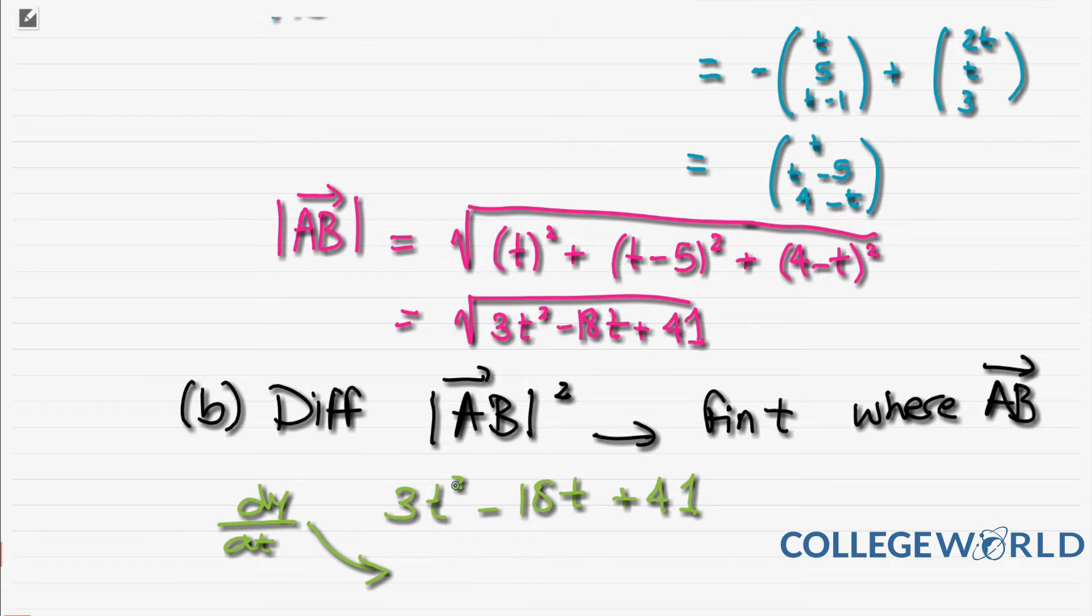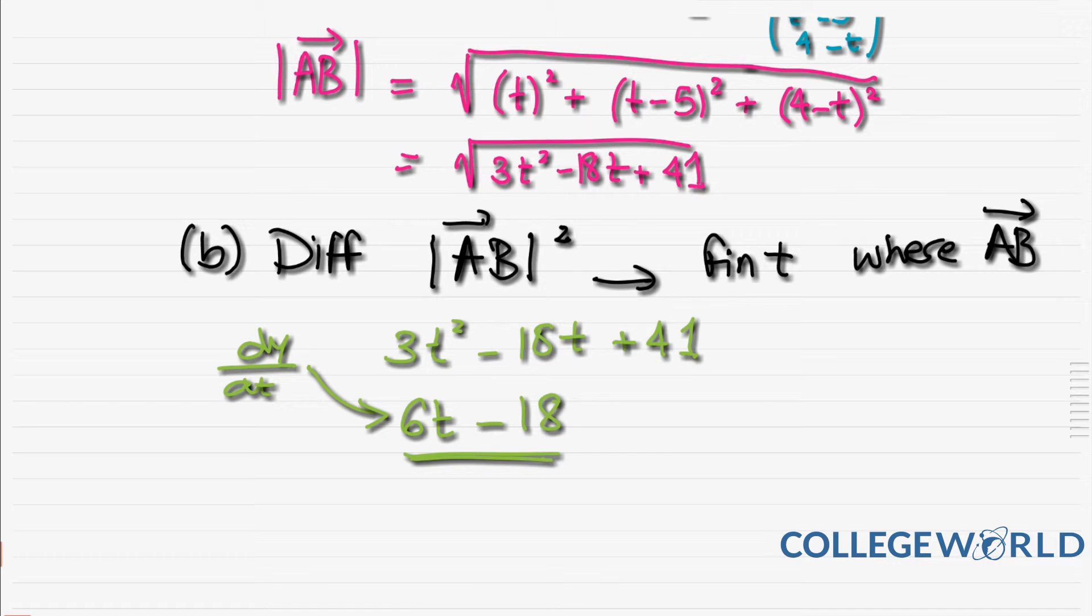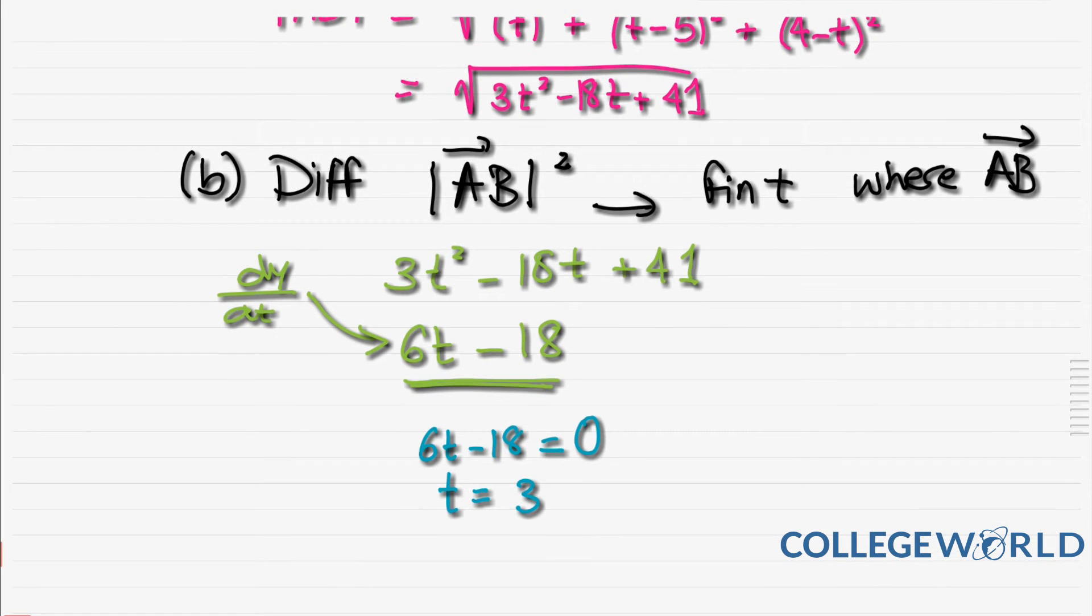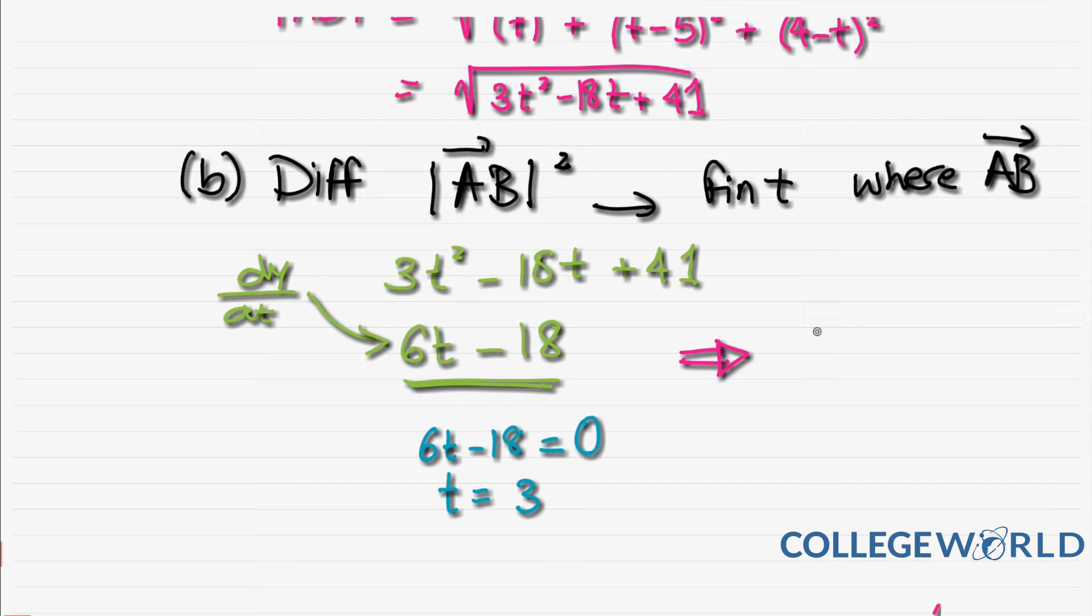We square it first since it's under the square root, giving us 3t² - 18t + 41. Differentiating, dy/dt equals 6t - 18. We know that differentiation gives us the slope, and the point where it's minimum is when the derivative equals zero. When 6t - 18 equals zero, t equals 3. If we differentiate again, we get 6, which is positive, so the point is a minimum.